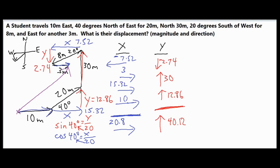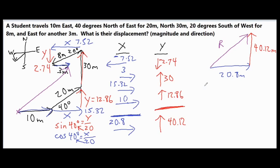Now we take our two final vectors — 20.8 meters to the right and 40.12 meters upward — and piece them together using the tip-to-tail method to find our final displacement. Our resultant is the purple vector connecting the beginning of the first to the end of the second. Using the Pythagorean theorem: 20.8 squared plus 40.12 squared equals R squared. Taking the square root gives us a resultant of 45.19 meters.